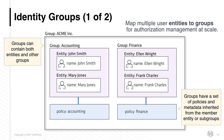Vault's identity system has support for groups. A group can contain multiple entities as its members, and a group can also have subgroups. Policies set on the group are granted to all members of the group. During request time, when the token's entity ID is being evaluated for the policies that it has access to, along with the policies on the entity itself, policies that are inherited due to group memberships are also granted.